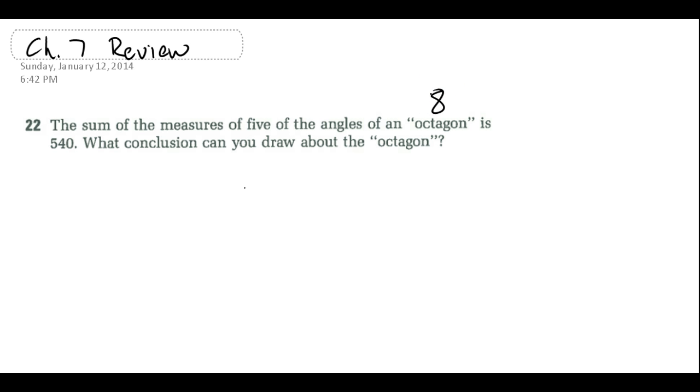So let's take a look at what we do know about all the angles of an octagon. So if it is an octagon, we know that the sum of all the interior angles is going to be 8 minus 2 times 180. So that's 6 times 180.